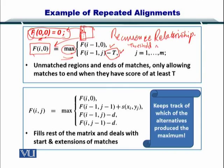This t is the threshold. It can be one, two, or three depending on the stringency or strictness that you want to apply in filtering the local alignments. If you have a high threshold, then those alignments that have only three matches will be ignored. But if you set it to one, then only those local alignments will be singled out which have a length of one.